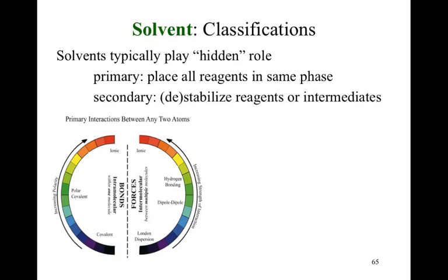The primary reason we use solvents is to get all of our reagents into the same phase. Once they're all in the same phase, they can all react, and everything is great. As a secondary role — and this is the hidden one — they can be used to either stabilize or destabilize certain reagents or intermediates in the course of our reaction.